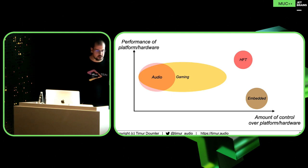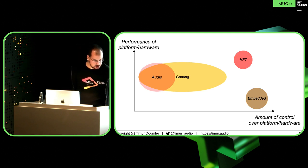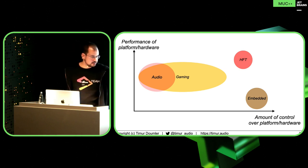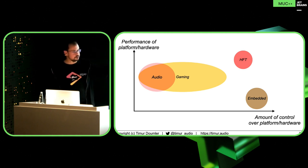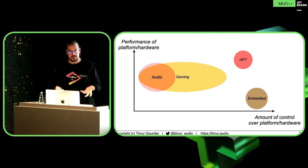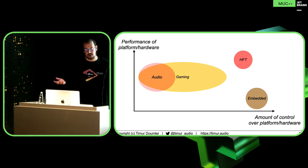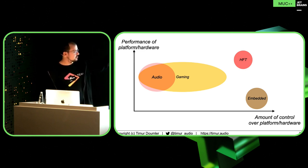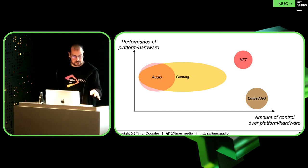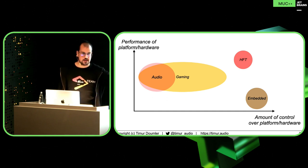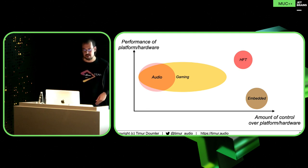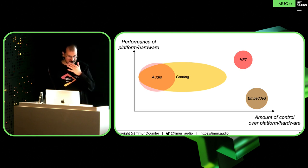How much control do you have over the hardware that the stuff is running on? The vertical axis is how powerful the platform is and the x-axis is how much control you have as a developer. If you're doing audio software, it needs to run on consumer laptops and consumer phones — all kinds of stuff, Mac, Windows, maybe Linux, maybe phones. You don't know how good the hardware is. In gaming, the blob is bigger — you might be writing for a phone, a PC, or a console where you know the specifications pretty exactly. In HFT, people use their own racks with customized hardware, and in embedded you actually design the hardware yourself.